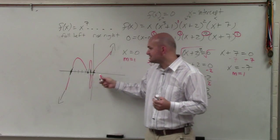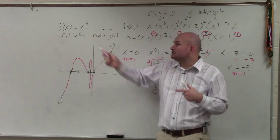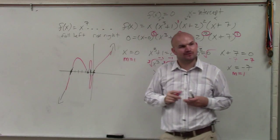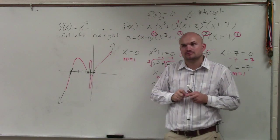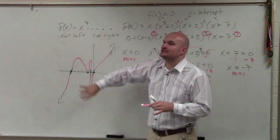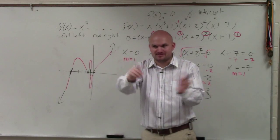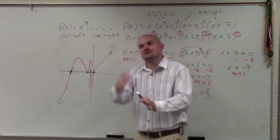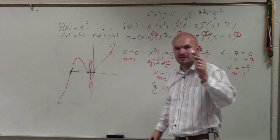if you know the zeros and its multiplicity, you can determine which ones cross, which ones bounce. And then if you add in what the end behavior is, you can sketch what the graph would look like. It's just a sketch. That's a whole different element. You'd have to plug in points and do that, which we're not doing. What does the general shape of the graph look like?